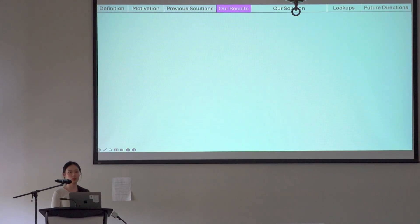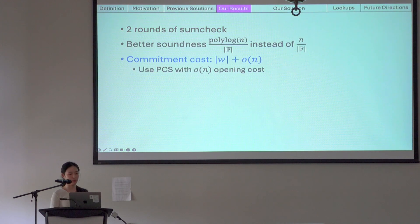So what did we manage to achieve? I'll introduce a way to perform permutation check using only two rounds of sum check. We have better soundness than previous permutation checks. Our soundness error is only poly log n over the field size.